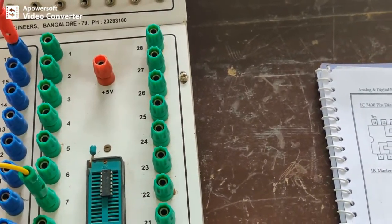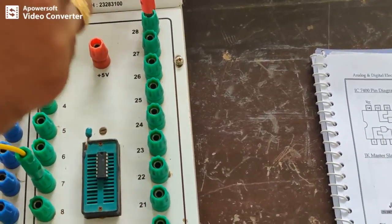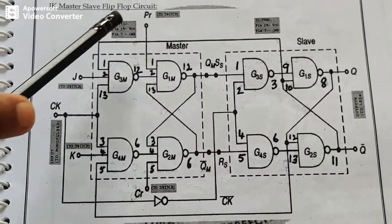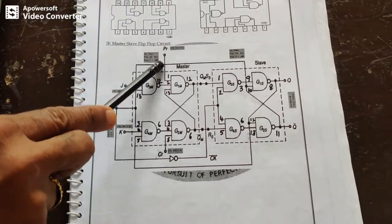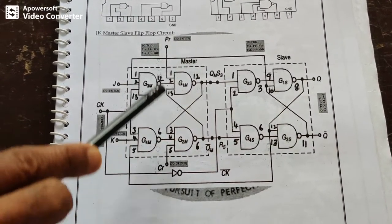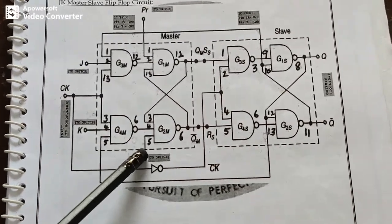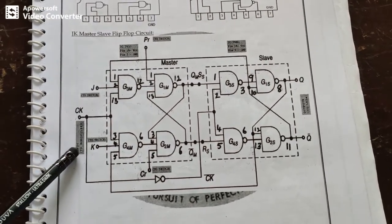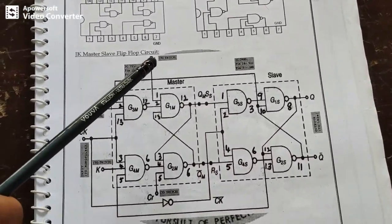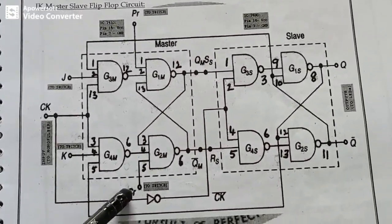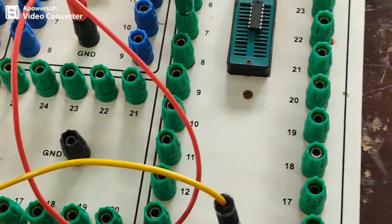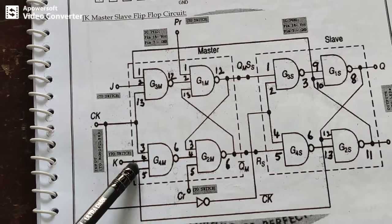Pin 14 of the 7404 is connected to VCC. Now we will connect the inputs J, K, preset, and clear. Preset is used to set the output to 1 and clear is used to set the output to 0. J goes to pin number 2 and K goes to pin number 4 of the first IC.